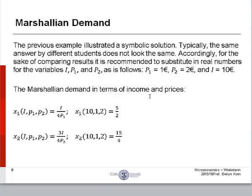Therefore, the Marshallian demand in terms of income and prices when you substitute in these real numbers will be x1 equaling 5 over 2, five-halves, and x2 equaling 15 over 4.